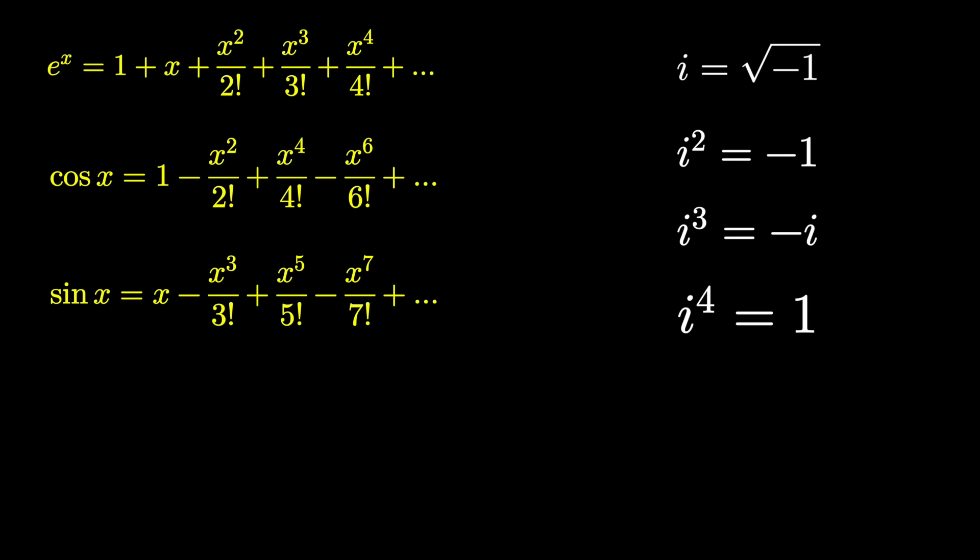What do you suppose e to the ix is? Well, throwing it into our pattern, it would be 1 plus ix plus ix squared over 2, and so on. And if we simplify this, using these rules for i, well, i squareds become negative 1, i cubes become negative i, i's to the fourth become positive 1, and that repeats as a cycle every fourth power.